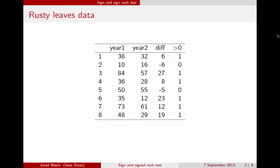Previously we talked about this rusty leaves dataset, and at that point we talked about the paired t-test where essentially we just run a one sample t-test on the difference in the trees, or within a tree, on the number of rusty leaves from one year to the next.